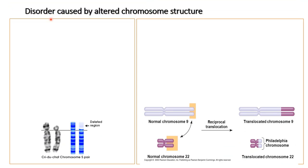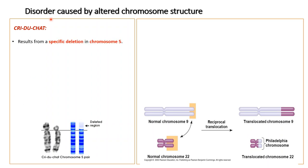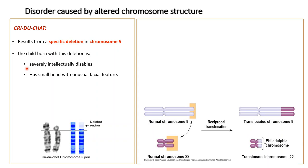Cri-du-chat results from a specific deletion in chromosome 5. The child born with this deletion is severely intellectually disabled, has a small head with unusual facial features, and a cry that sounds like the meowing of a distressed cat. The child has a tendency to die in early childhood.